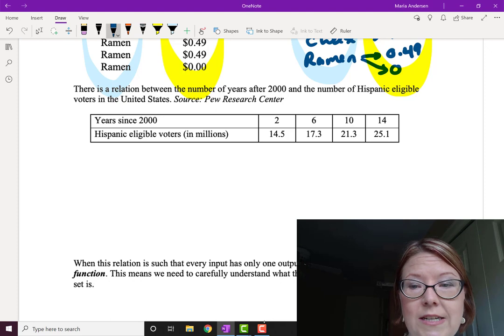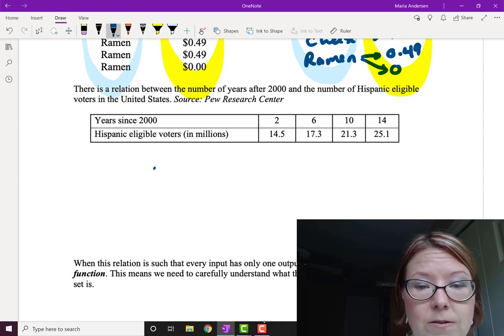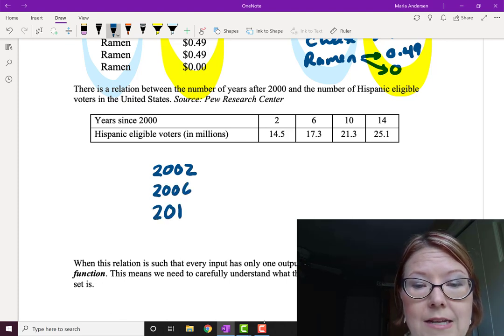6, 10, and 14 years after 2000. So we could make a set of years. So there's the year 2002, the year 2006, 2010, and 2014.